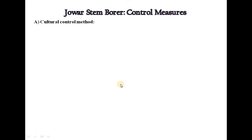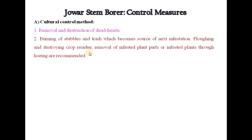For cultural control of jawar stem borer: removal and destruction of dead hearts; burning of stubbles and trash which become a source of next infestation; plowing and destroying crop residues; and removal of infested plant parts through hoeing are recommended.